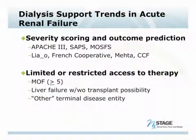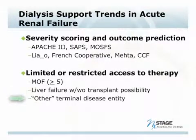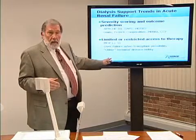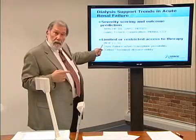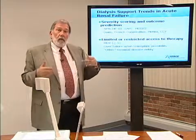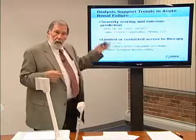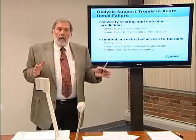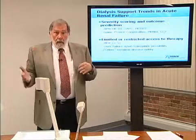Should dialysis be limited? Should we restrict access to dialytic support if a patient has more than five organs failed, has a hepatorenal situation with no possibility of liver transplant, or has some other terminal disease with acute kidney injury on top? There is a conundrum here: research on multi-organ failure patients suggests that earlier dialysis — not necessarily for renal support but for other organ support — may in fact help. This confounds indications for dialytic support.